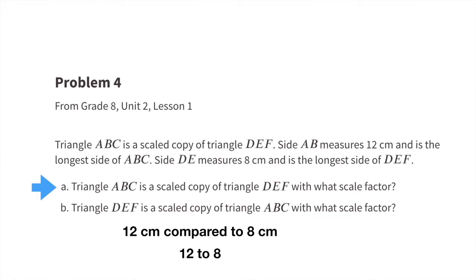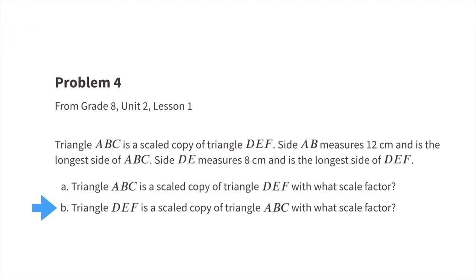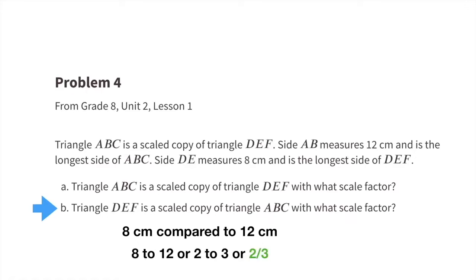8 centimeters compared to 12 centimeters — that's the same as an 8 to 12 ratio. An 8 to 12 ratio is the same as 2 to 3, or two-thirds. The scale factor would be two-thirds.